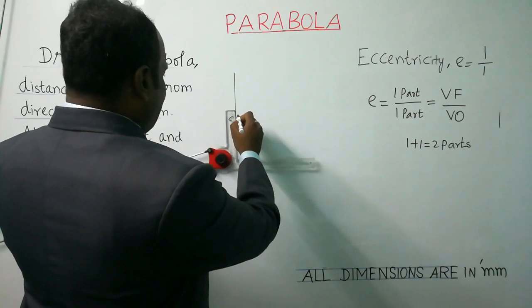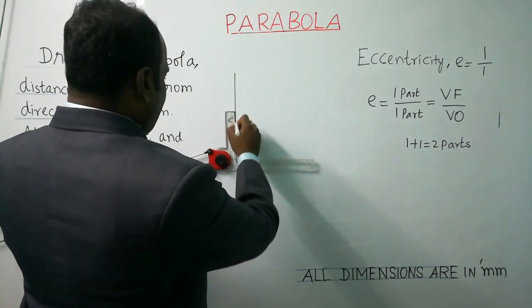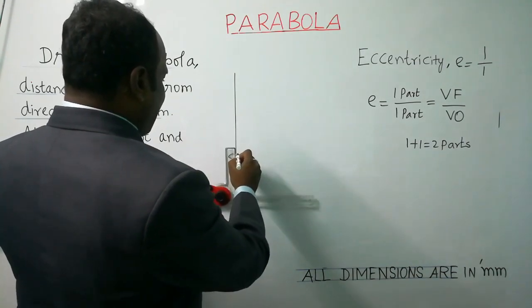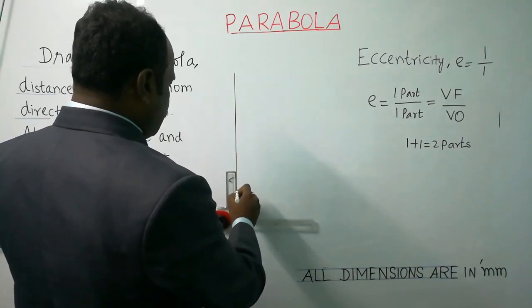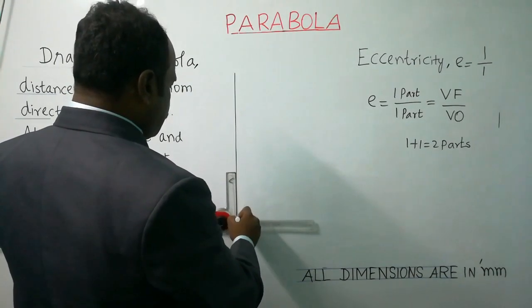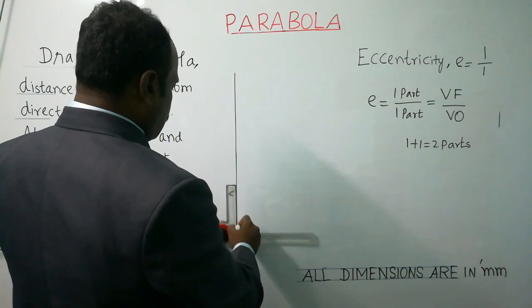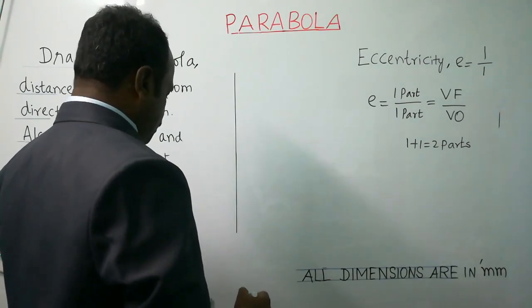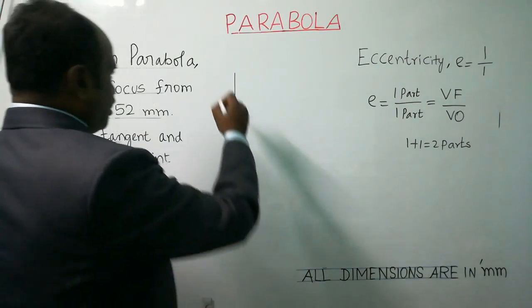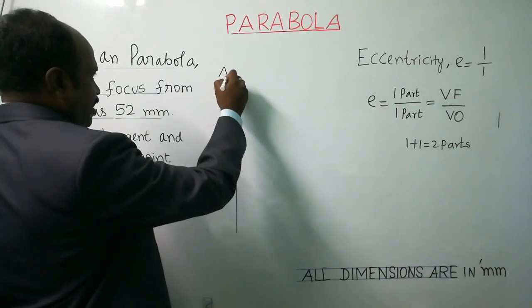Take your H-pencil and draw a fixed straight line called as the directrix. Label the endpoints A and B.